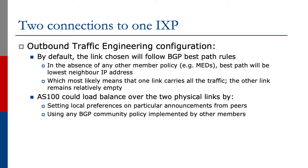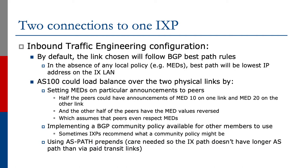Outbound traffic engineering can be influenced by particular announcements from peers or by using any BGP community policy implemented by other members. Inbound traffic engineering by default would follow the link chosen according to BGP best path rules. In the absence of any local policy — again, for example MEDs sent to other peers — the best path will be the lowest IP address on the IXP LAN.